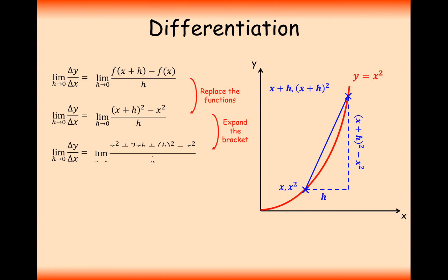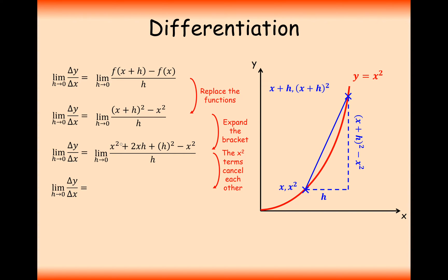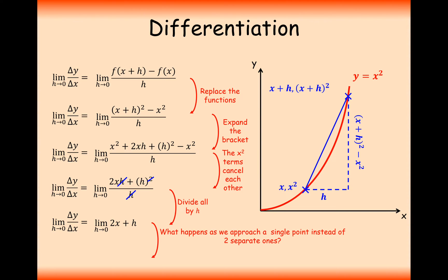Expanding the brackets, what we'll get is x squared plus 2xh plus h squared minus x squared, all over h. Now we can cancel out the x squared terms at the front and back of the fraction. Then we divide through by h, simplifying that value. So the limit as h tends towards zero is 2x plus h. The limit of 2x as h tends to zero is still 2x because h doesn't feature in that term, and the limit of h as h tends to zero is just zero.